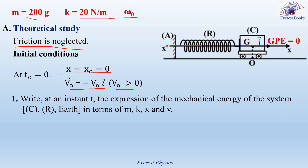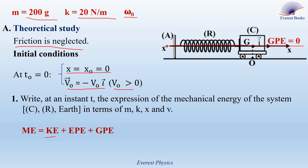Number one: write at an instant T the expression of the mechanical energy of the system C, R in terms of M, K, X, and V. The mechanical energy is given by kinetic energy plus elastic potential energy plus gravitational potential energy. Since the horizontal plane containing G is taken as a reference level for gravitational potential energy, then GPE remains zero. So ME is equal to one-half M V squared plus one-half K X squared.